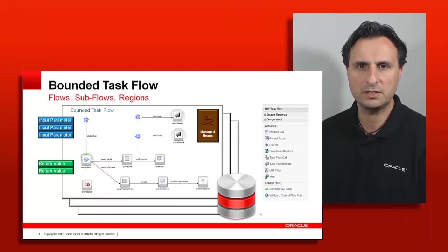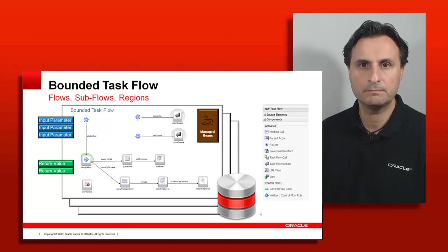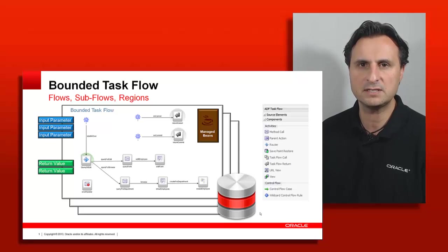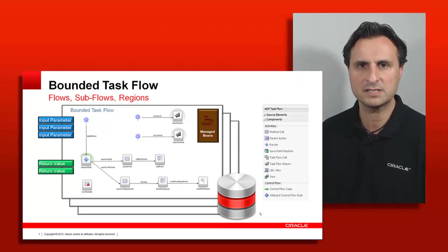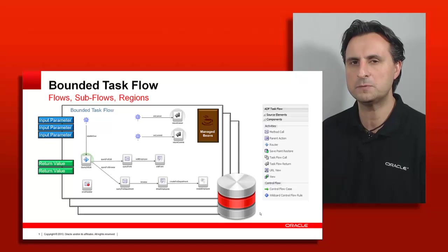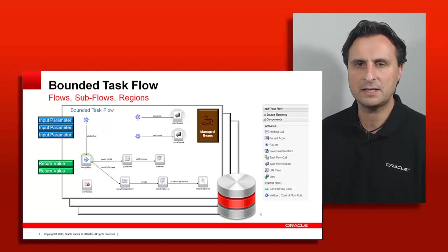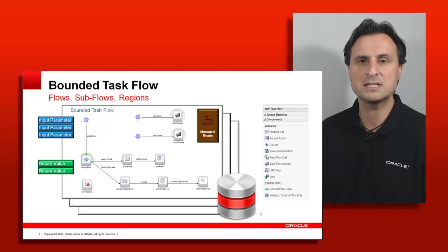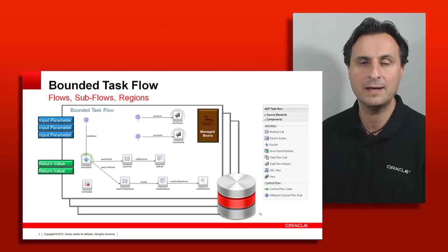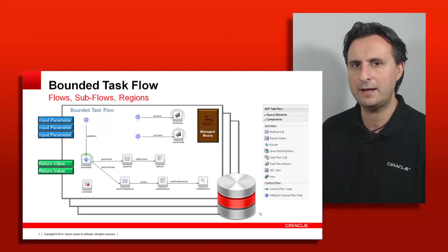If we look at this screenshot here, we see the taskflow architecture for a bounded taskflow, which includes input parameters and return values as the public API. Navigation cases are defined within, and you have a default activity which is a landing pad for this bounded taskflow, then you specify navigation cases between the different view activities. Bounded taskflows can also have their own managed bean defined. It's important to understand that the managed bean defined in a bounded taskflow is not accessible from the outside — it's meant to be private to this taskflow and will be deployed if you decide to reuse the taskflow in an ADF library.